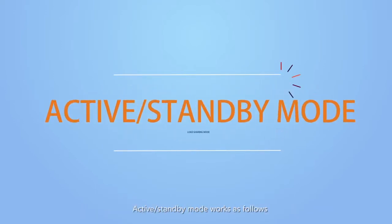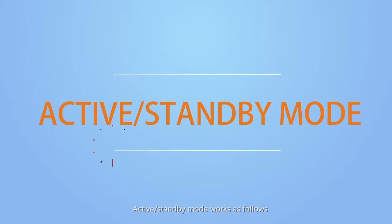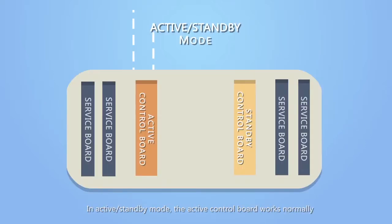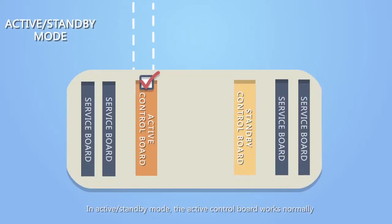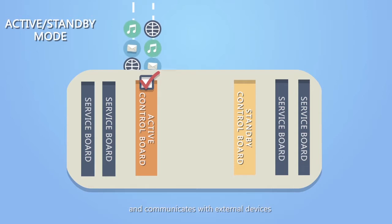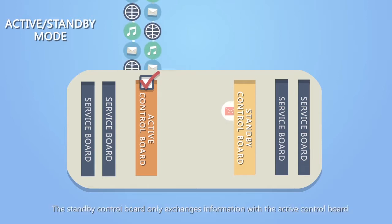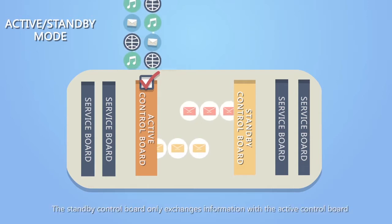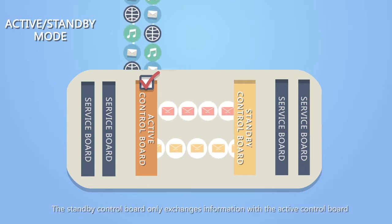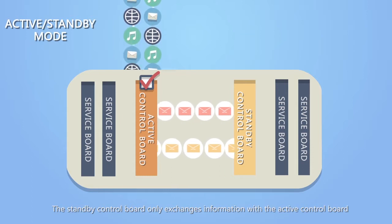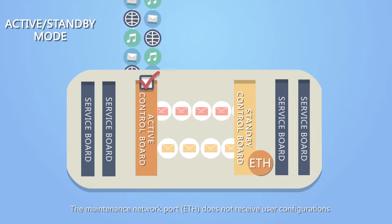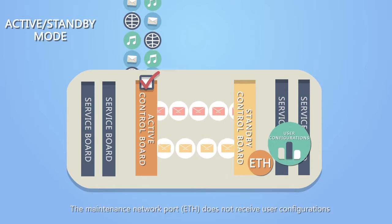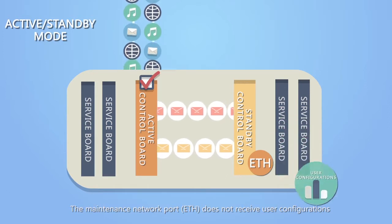In active standby mode, the active control board works normally and communicates with external devices. The standby control board only exchanges information with the active control board. The maintenance network port, ETH, does not receive user configurations.